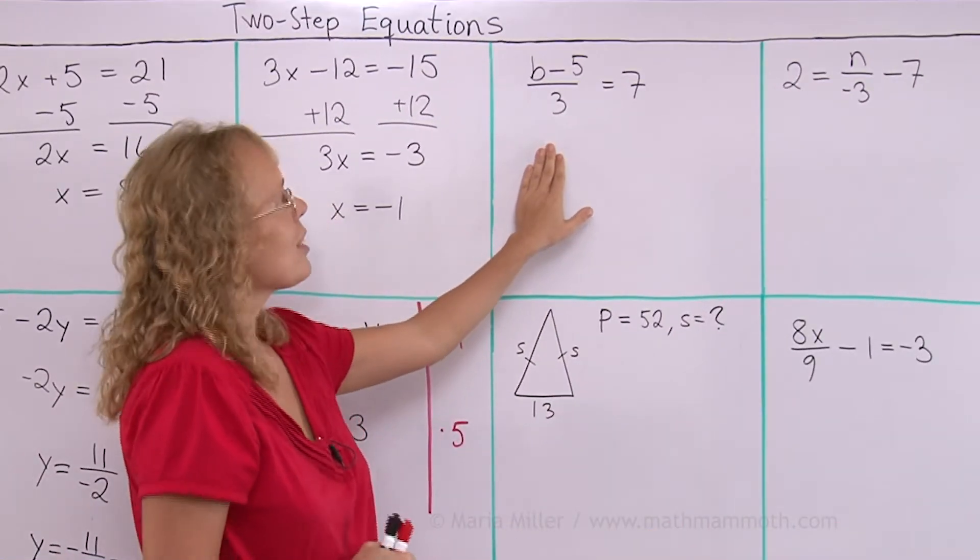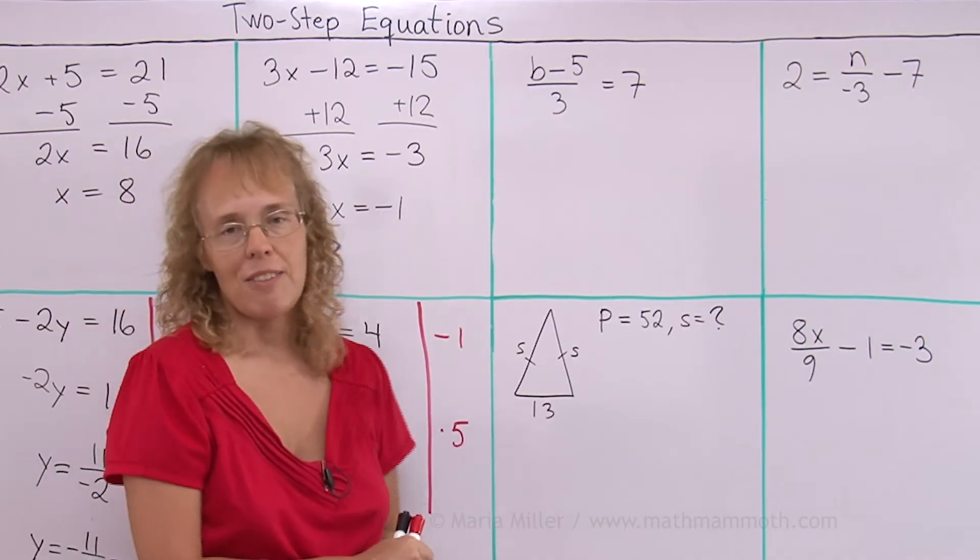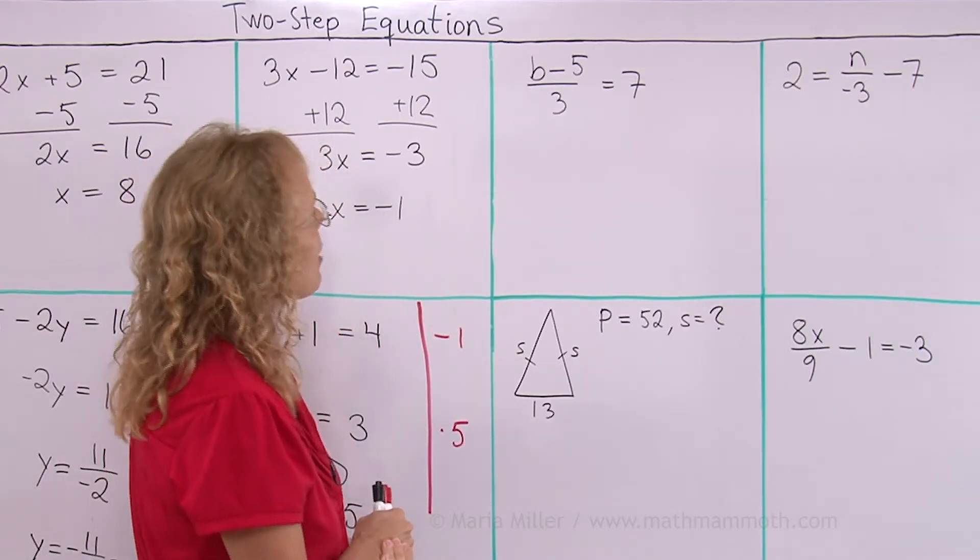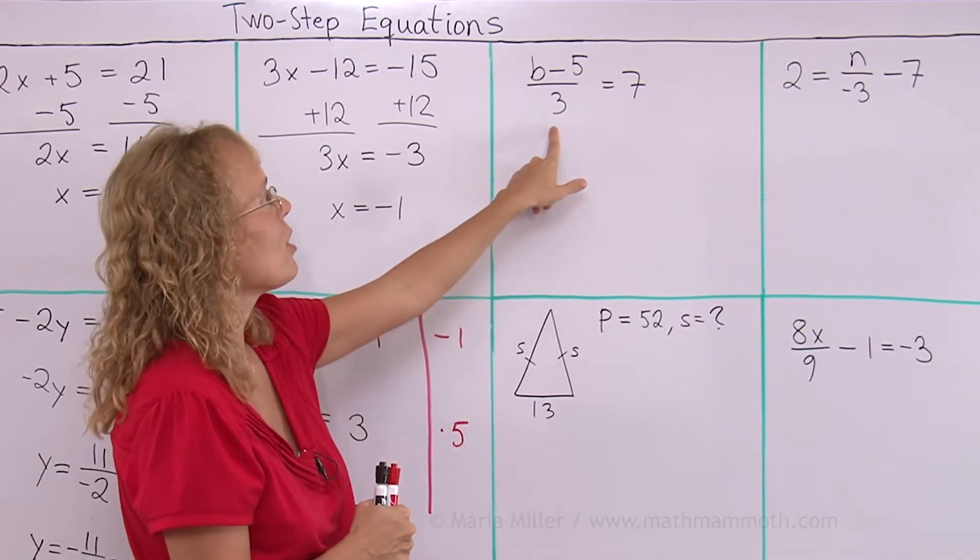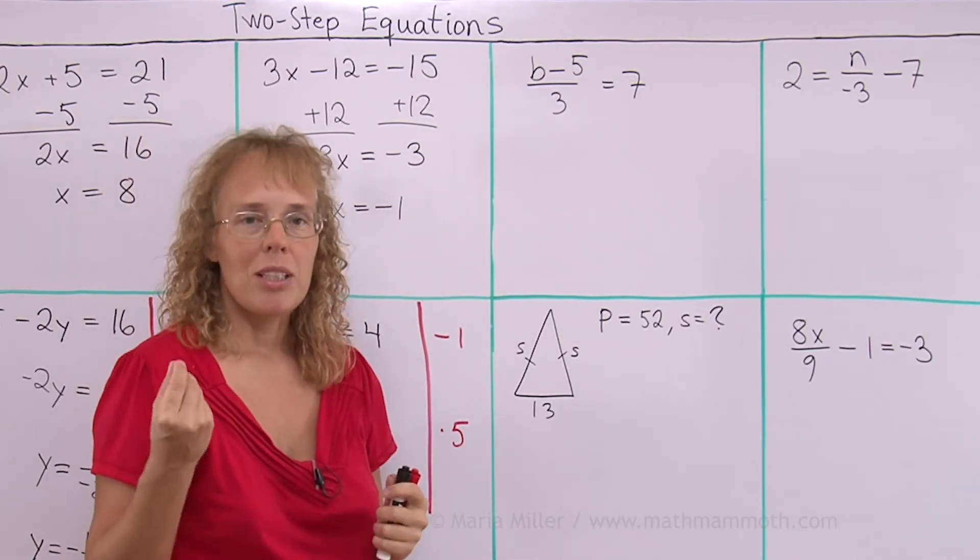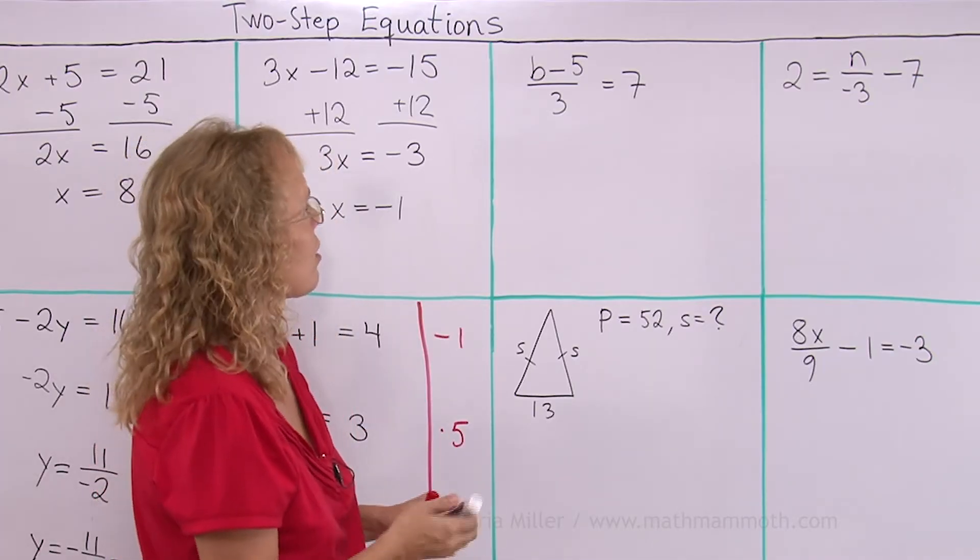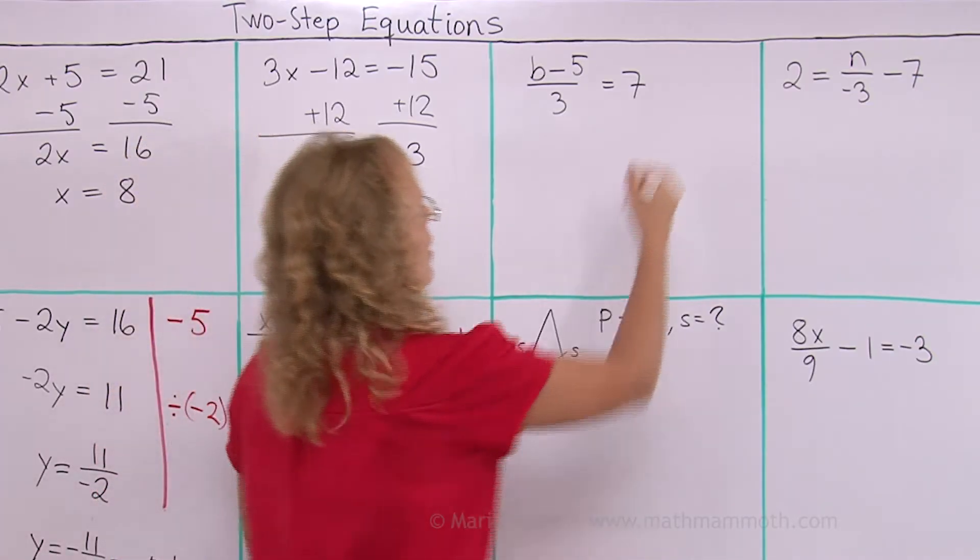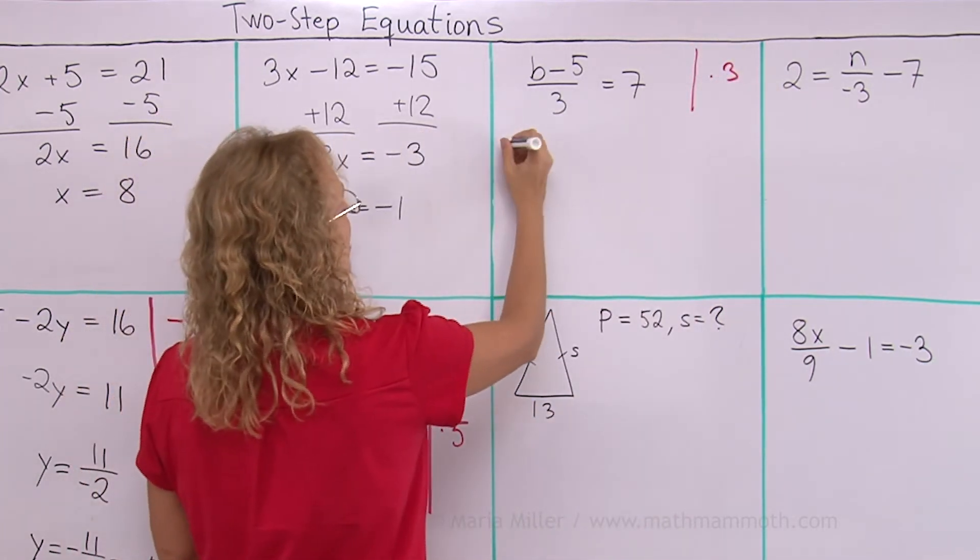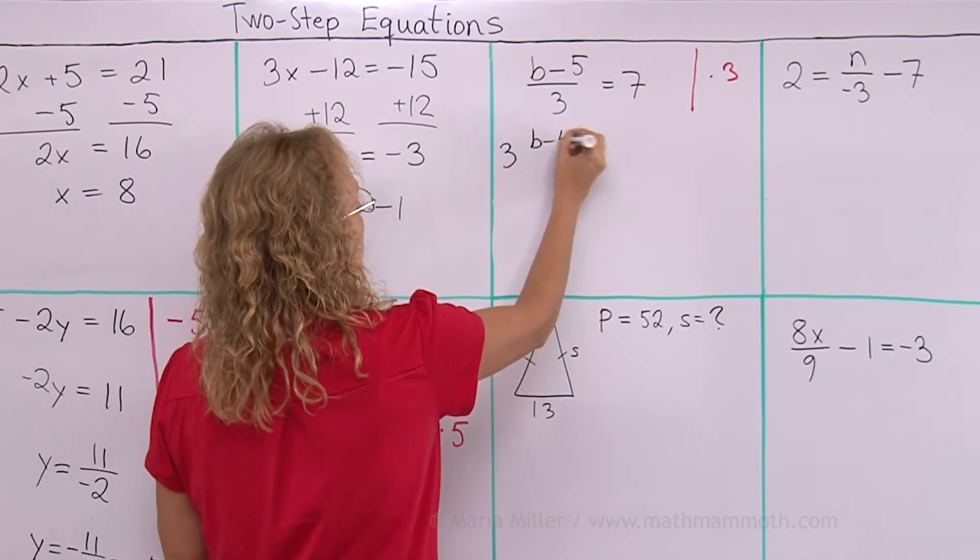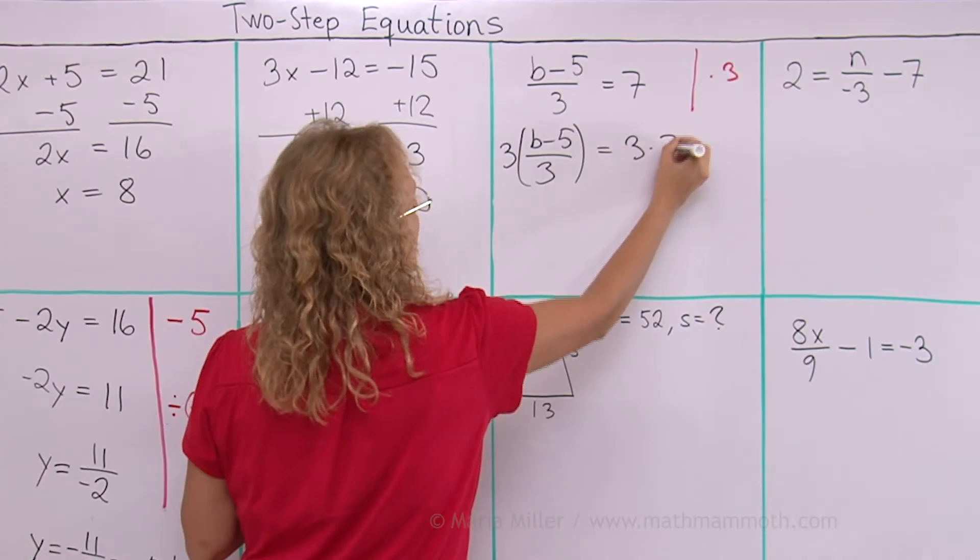Here we have something different. Here we have b minus 5 over 3 equals 7. This time I cannot start out by trying to get rid of the minus 5 because I have this division here by 3. This time we need to start by multiplying both sides by 3. Multiply both sides by 3. And let me show how it looks like if I have 3 times and then this here. Over here I get 3 times 7 of course.